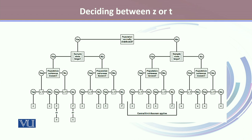While making the decision about Z or T, it's very important that we consider four different aspects. First, whether the population is normally distributed or not. Second, whether the sample size is large enough or not. Third, whether population variances are known or not. And lastly, whether they are equal or not.